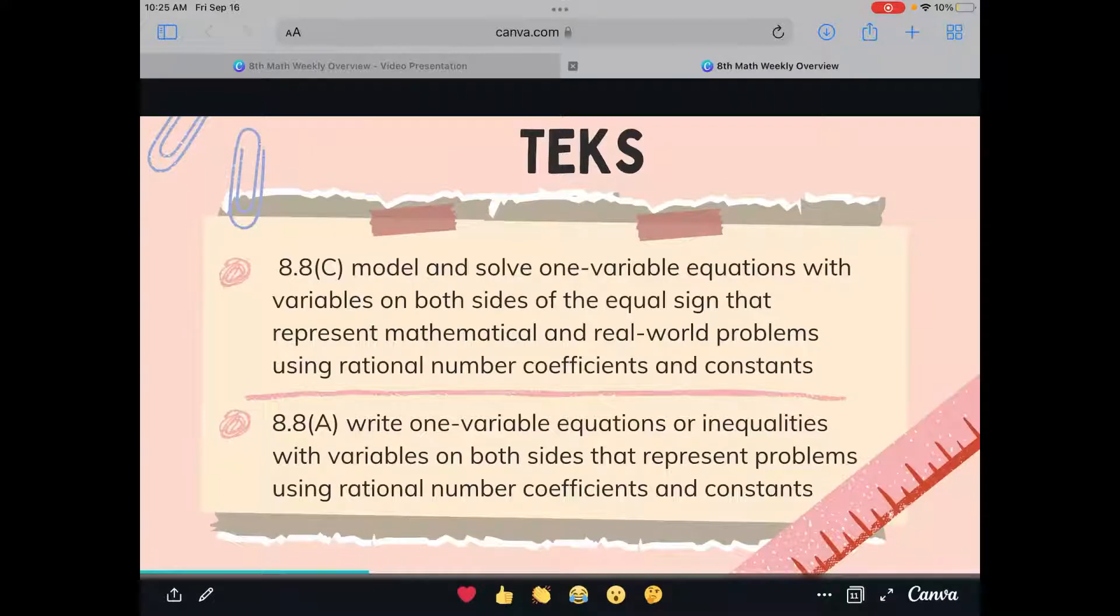Say that three times fast. Model and solve one variable equations with variables on both sides of the equal sign that represent mathematical and real world problems using rational number coefficients and constants. And then 8.8A is writing one variable equations or inequalities with variables on both sides that represents problems using rational numbers and coefficients. So one of them is modeling and solving and the other one is writing.